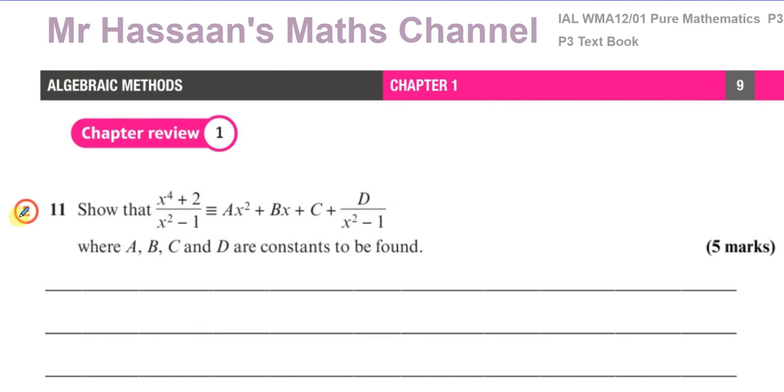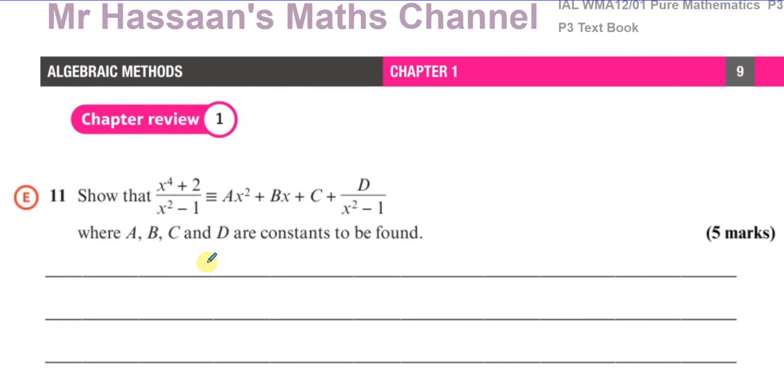This is a question from the algebraic methods chapter about algebraic fractions. Here we are told to show that when you divide x to the power 4 plus 2 over x squared minus 1, it splits up into this mixed number, becoming ax squared plus bx plus c plus d over x squared minus 1, and you need to find what a, b, c, and d are.